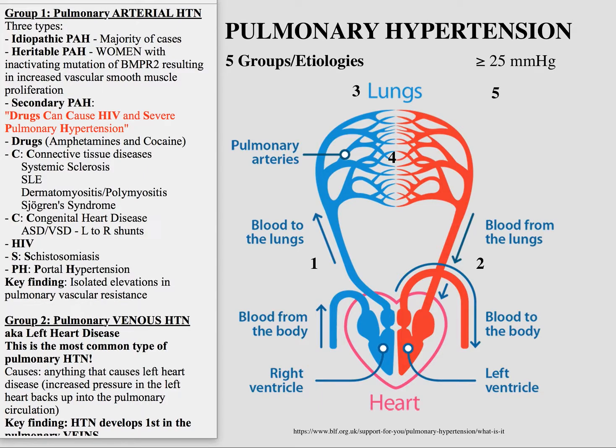The most important thing initially is to define what it is. Basically, as the name suggests, it's when you have high pressure within the pulmonary circulation. In particular, the number you have to remember is greater than 25 millimeters of mercury. So that is the definition of pulmonary hypertension.